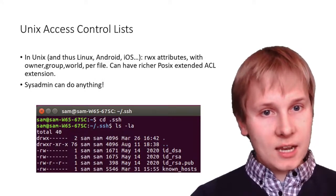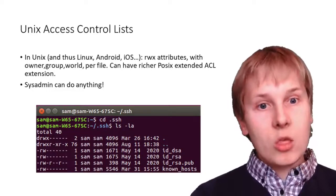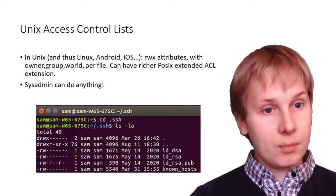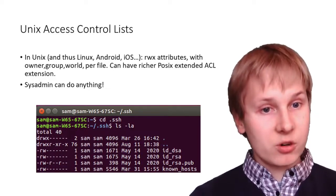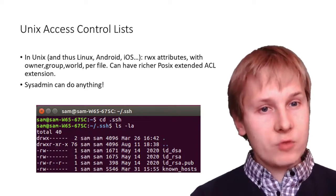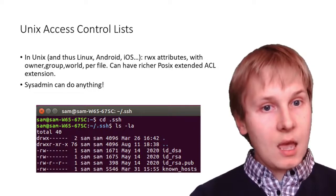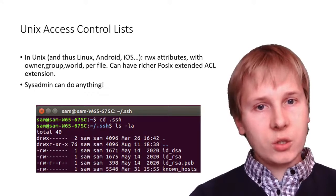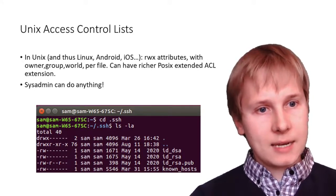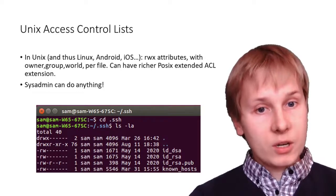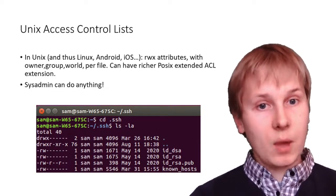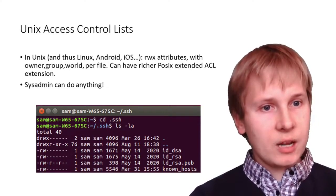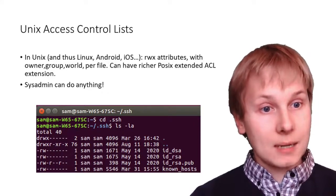In Unix — and thus Linux, Android, and iOS — rather than a full access control list of arbitrary complexity, each file has read, write, and execute attributes. With those three attributes, you have three different settings per file: what the owner can do, what a group attached to it can do, and what the whole world can do. There's a richer POSIX standard ACL extension allowing full access control lists of arbitrary complexity, but it's not typically used.